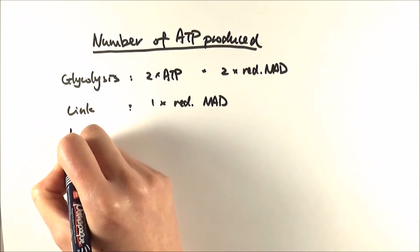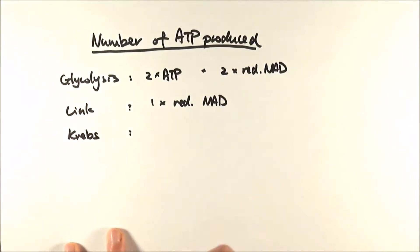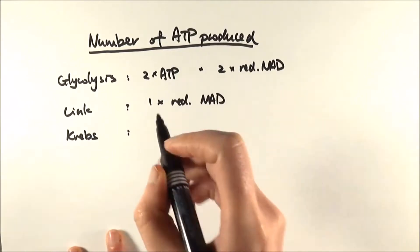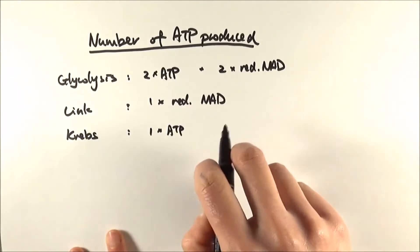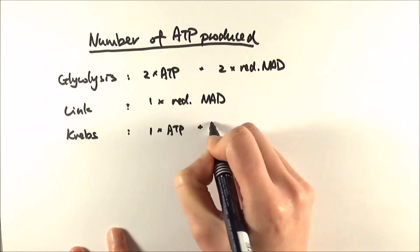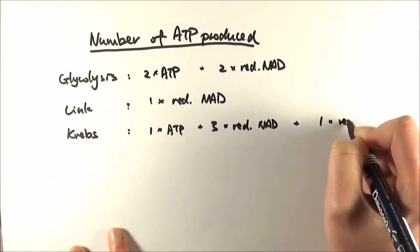The third one, which is the Krebs cycle, this is the bit where we've really made lots of reduced coenzymes. So we have made 1 ATP, 2 carbon dioxide molecules, and also 3 reduced NAD, as well as 1 reduced FAD.